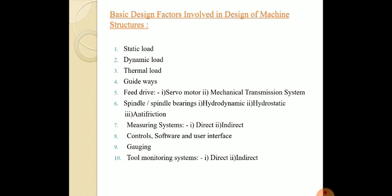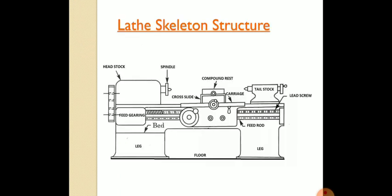First, we'll be studying the different types of loads: static loads, dynamic load, and thermal load. Before dealing with this, let me show you the lathe skeleton structure. As you can see from the diagram, this is a lathe machine with the headstock, tailstock, spindle, compound rest, carriage, cross slide, feed bearing, and bed.